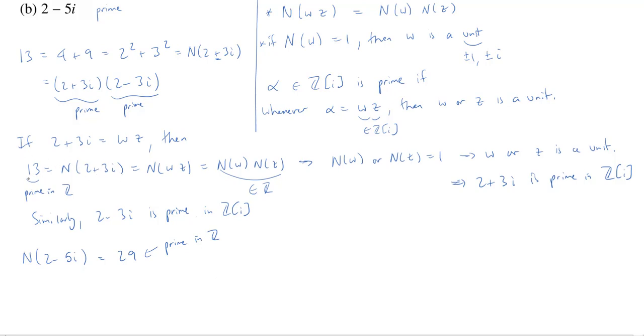And so we have the exact same argument as we had for norm of 2 plus 3i. We knew it was equal to 13; you can't factor 13 in the integers because it's prime, and therefore 2 plus 3i is prime. So the same argument shows 2 minus 5i is prime in ℤ[i].